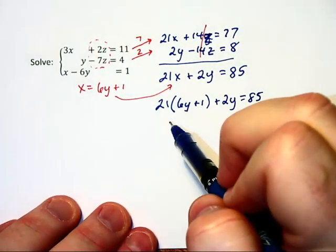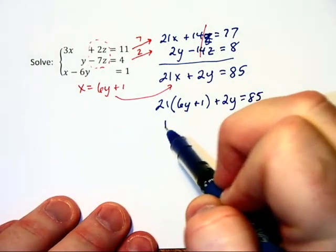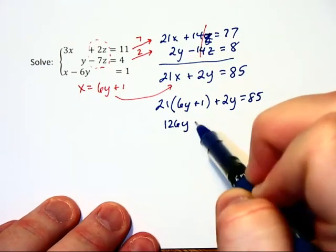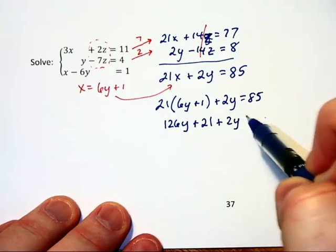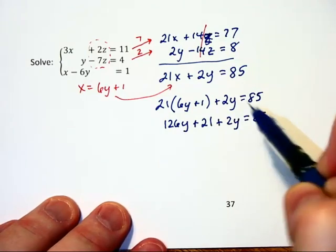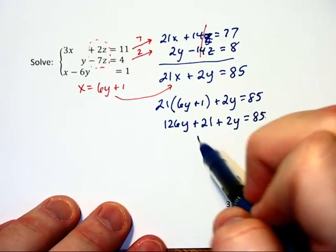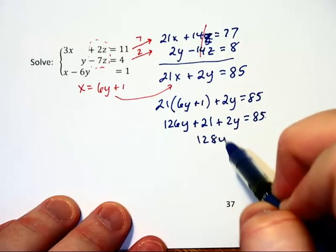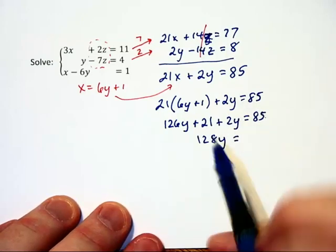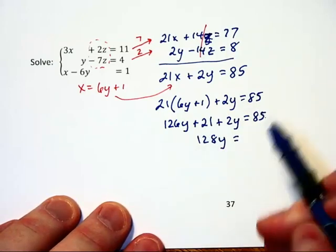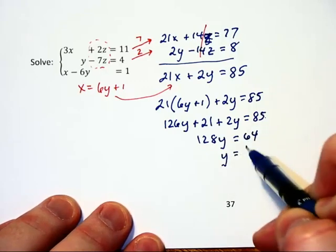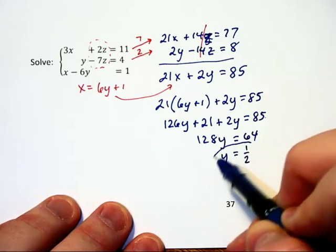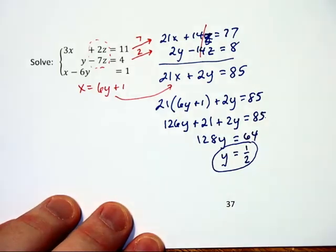Okay, we can solve this. 21 times 6, that's 126y plus 21 plus 2y is equal to 85. Combining like terms, we have 128y is equal to, well, let's subtract 21 on each side to get 64, and therefore, y is equal to 1 half. So there's a portion of our solution set.